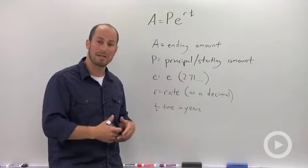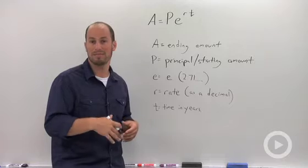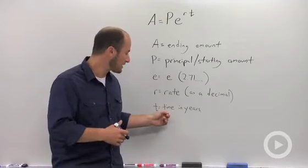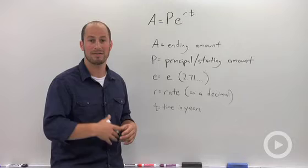R is your rate, which is going to be expressed as a decimal, so if you had 5%, it'd be 0.05. And time is the amount of time you have your investment in years.